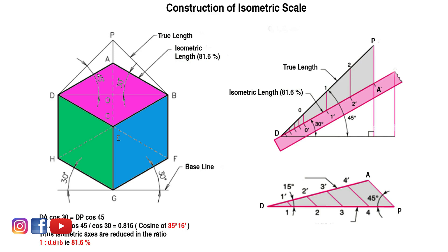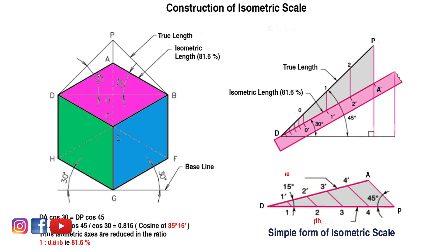The isometric scale is constructed using triangle DAP, where DA is inclined at 30 degrees (the isometric length line) and DP is inclined at 45 degrees (the true length line). From every point on the true length line, draw a vertical line to the isometric line to obtain the corresponding isometric length. For example, from point 3 on the true length line, draw a vertical to reach point 3' on the isometric line — D3' is the corresponding isometric length.